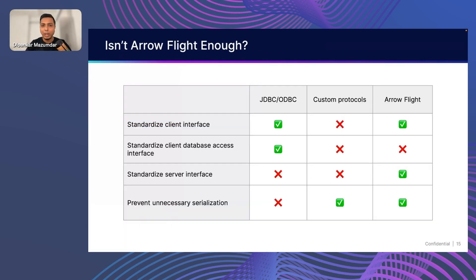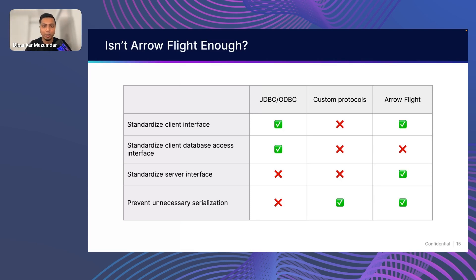So that all sounds cool. The question is, are we done? Is Arrow Flight enough? If we go back and look at our requirements metrics, we can see how Flight standardizes the client interface, which is great. However, it doesn't standardize the client-database access interface. It does standardize the server interface and prevents that unnecessary serialization and deserialization. So we're almost there — we still need to standardize the client-database access interface.